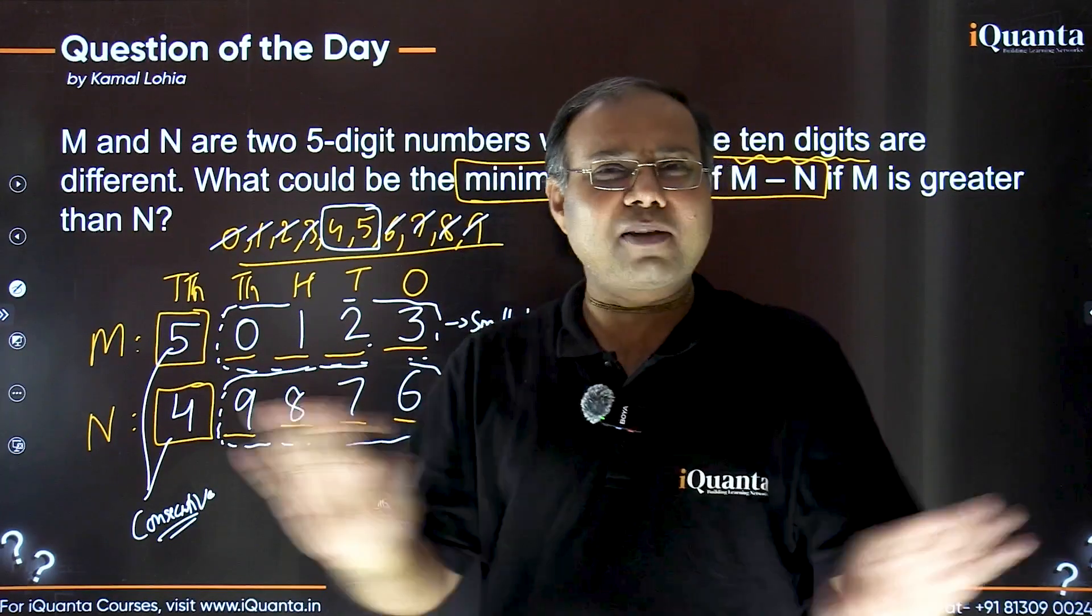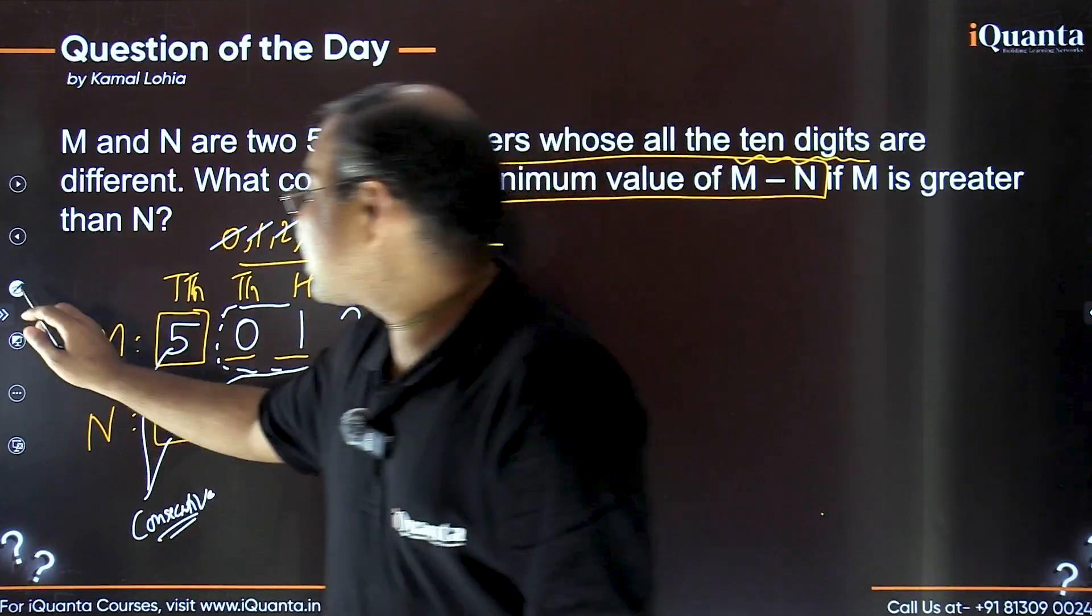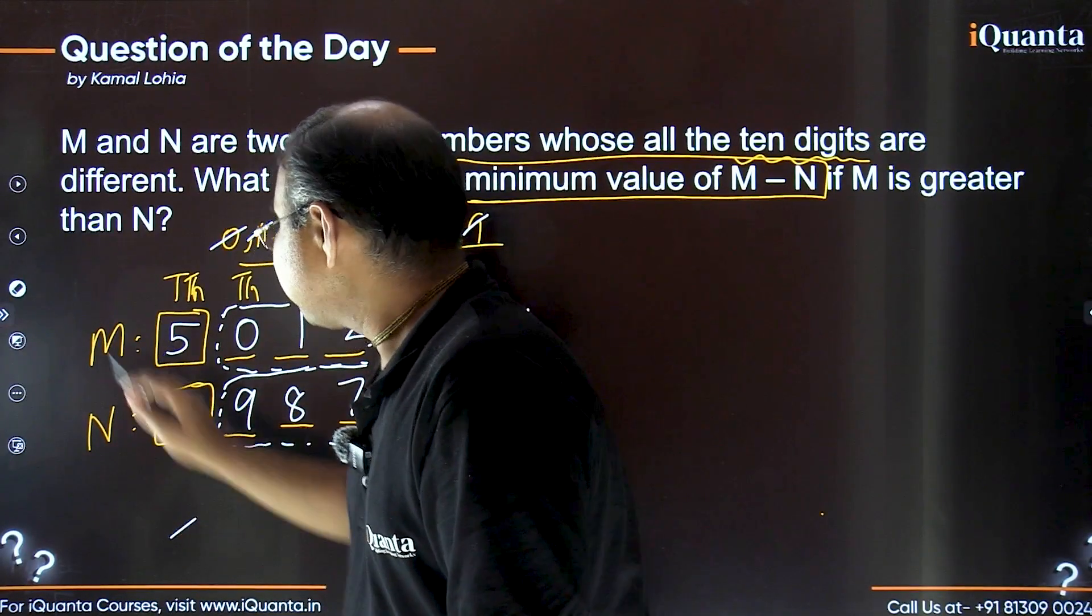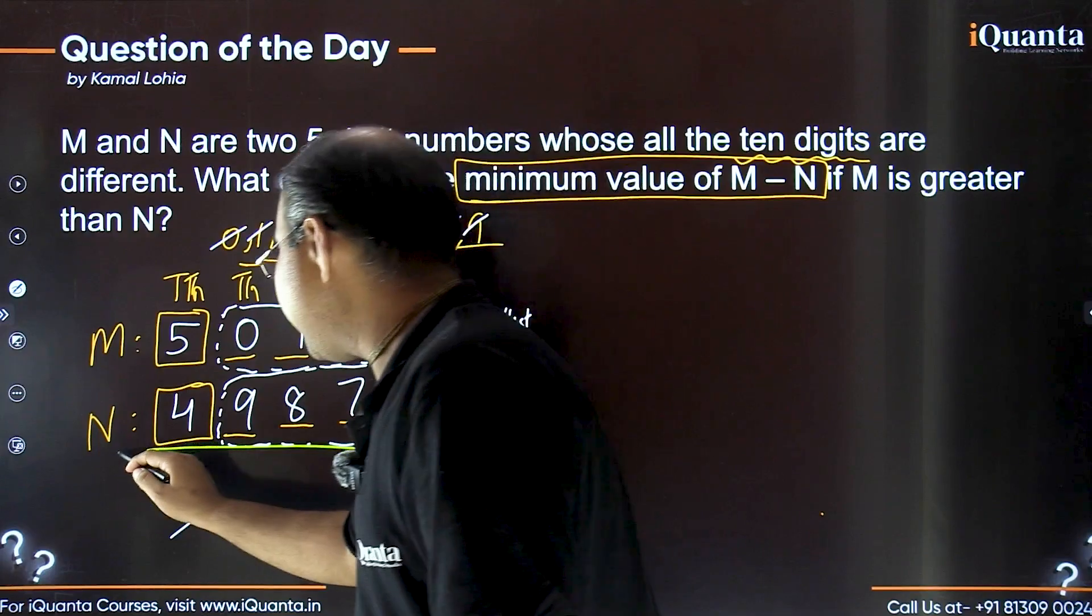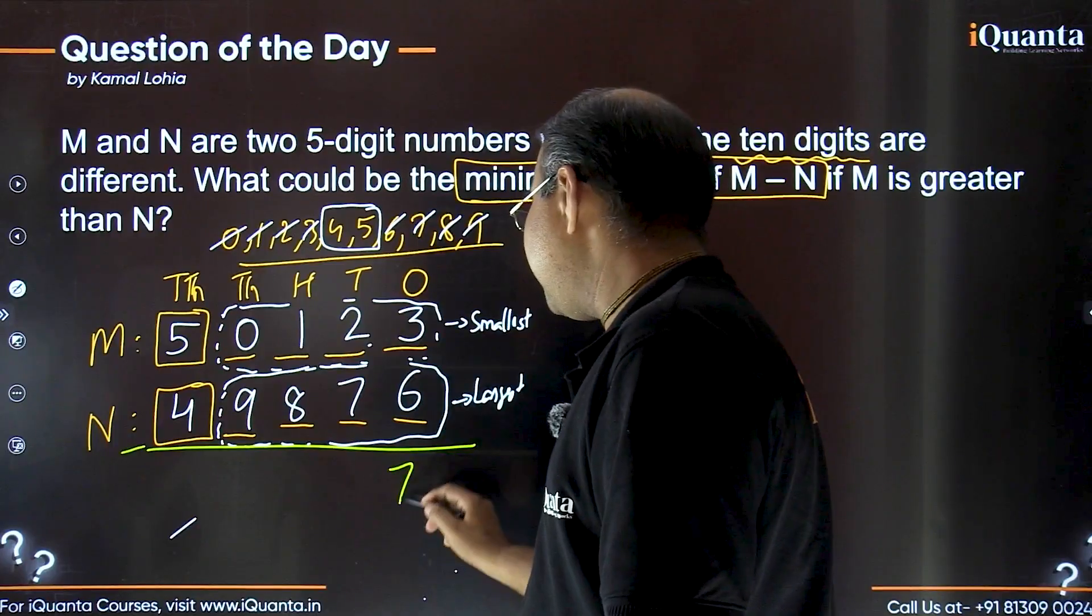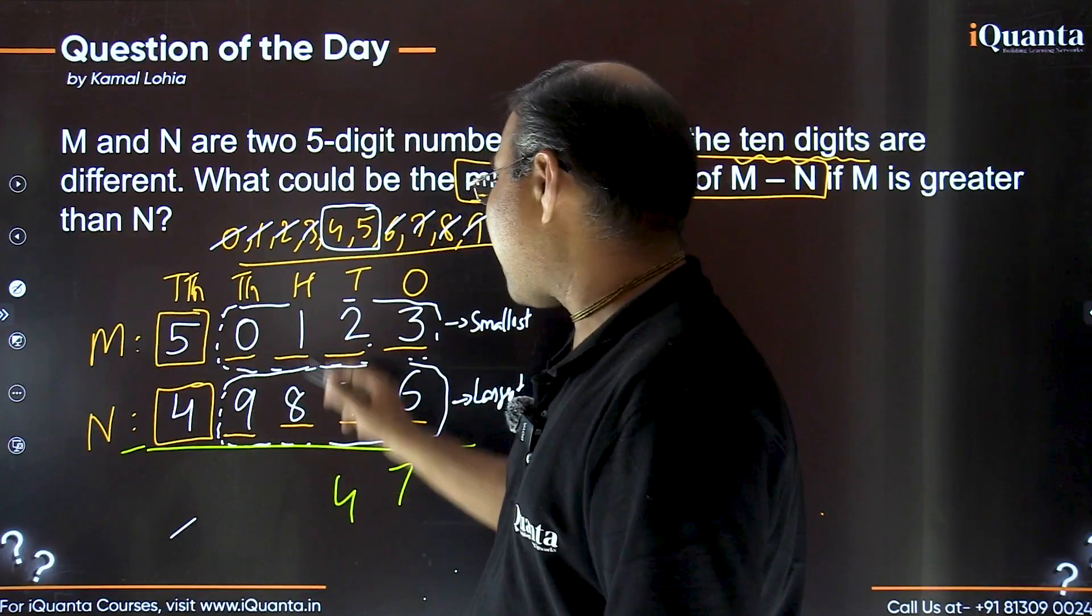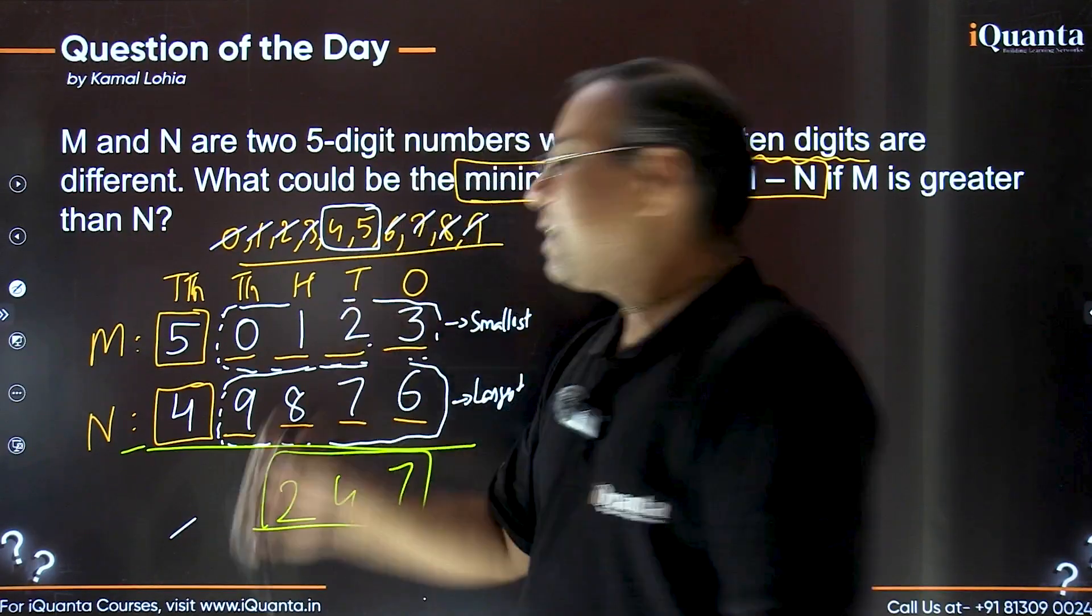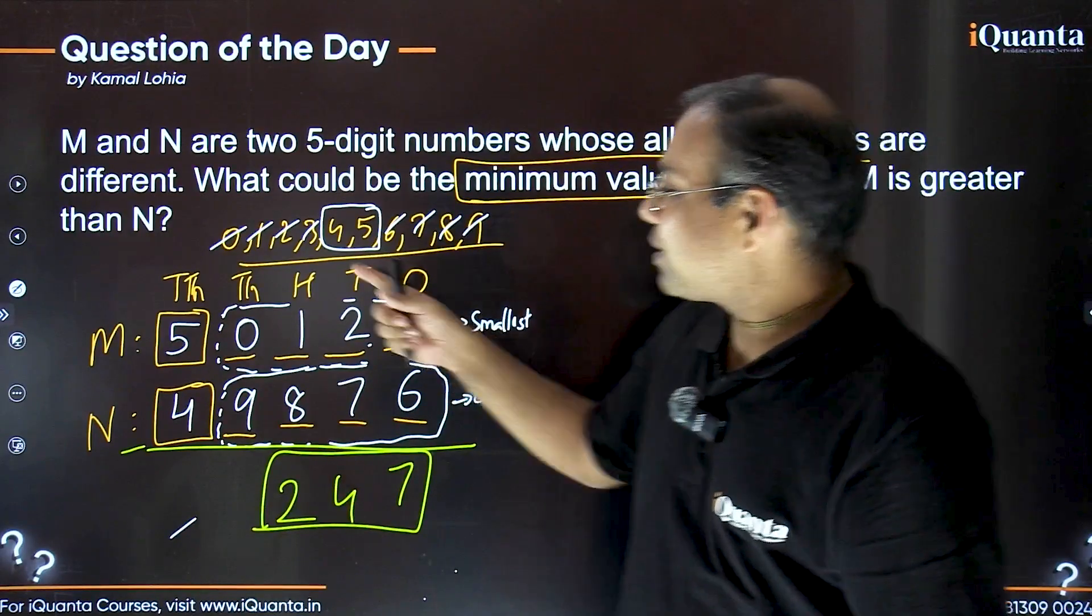That's it. We are done. We just need to subtract these two numbers and that will give us the best solution, the best answer which we are looking for. So, let me erase this part to create some space here and let's figure out this value. This value is going to be how much? I just need to subtract that. Let's do it. 13 minus 6 would be 7 or 6 plus 7 makes it 13, 3, 1 carry, 8, 8 plus 4, 12, 2, 1 carry. That's now 499. So, the gap would be 2. 499 plus 2 makes it 501. So, 247. That is the minimum possible difference or minimum possible value for this difference of M and N.